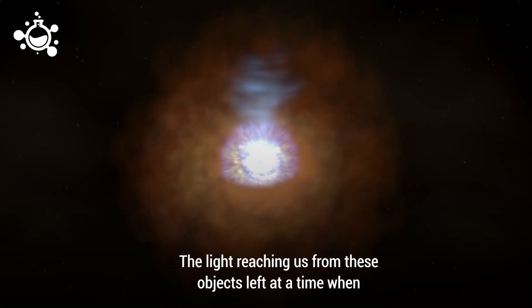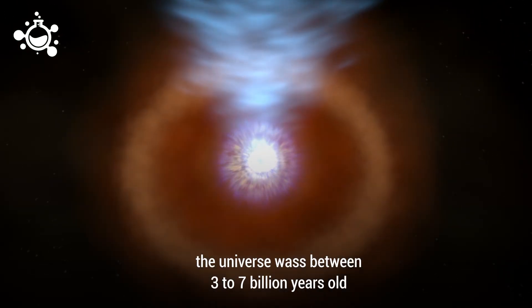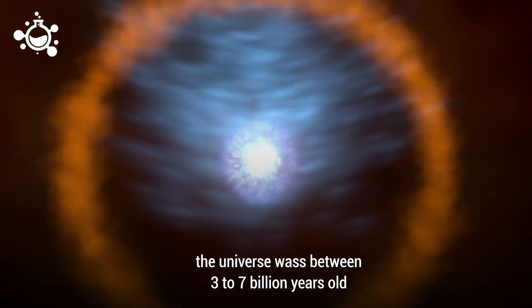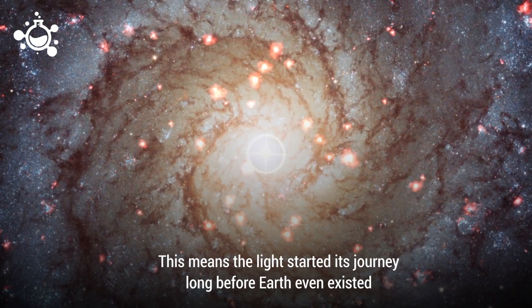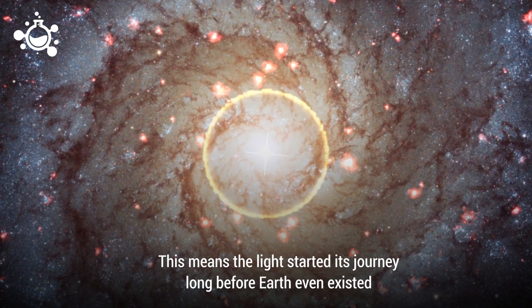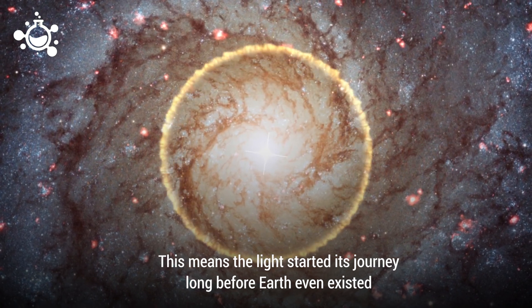The light reaching us from these objects left at a time when the universe was between 3 to 7 billion years old. This means the light started its journey long before Earth even existed.